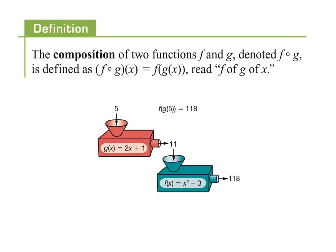Let's look at one more function operation called composition. For the previous operations, we had one function and another and then did something to the answers. For composite functions, you input to one function, take that answer, and put it into the next function. Composition of two functions f and g is denoted with an open circle and is defined as f of g of x — a function of a function of a variable.